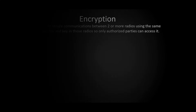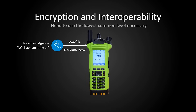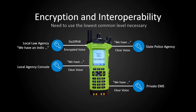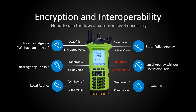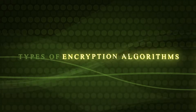Encryption is done by programming in the same algorithm, key data, and key ID or KID, so only designated radios can access messages. However, to maintain interoperability, you may not want encryption at all if the agencies you will be communicating with do not have encryption or are utilizing talk groups that cannot be encrypted. You will need to use the lowest common level necessary — it is possible to be too secure.